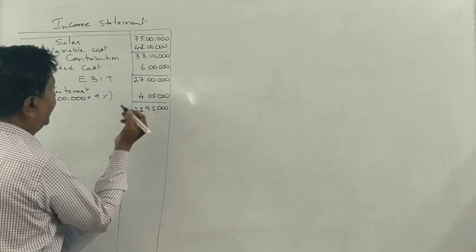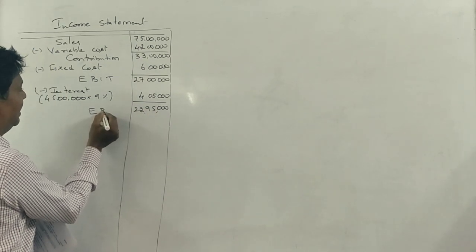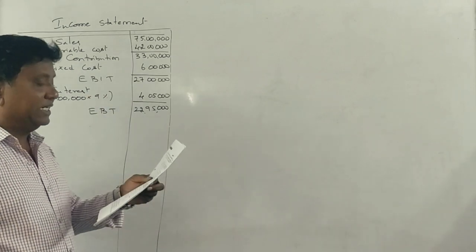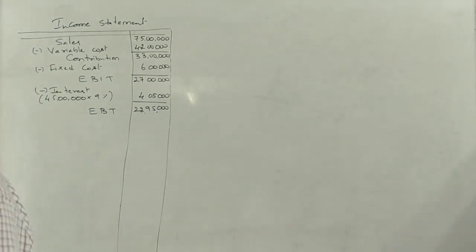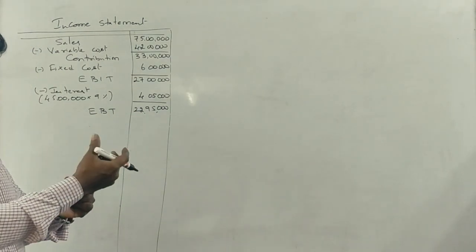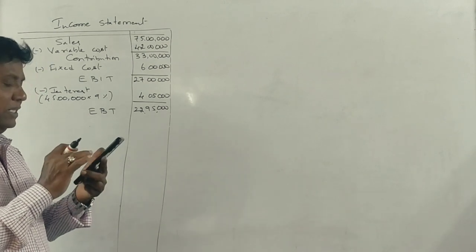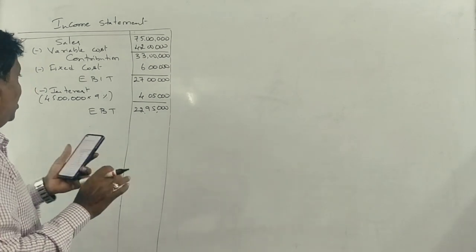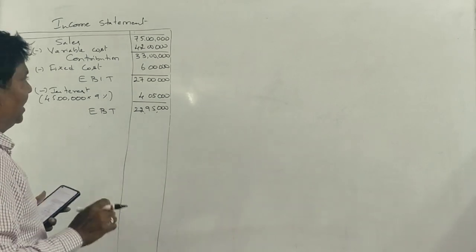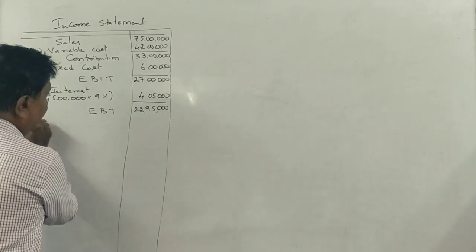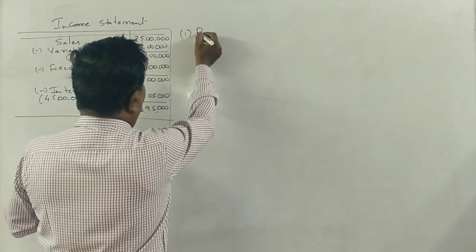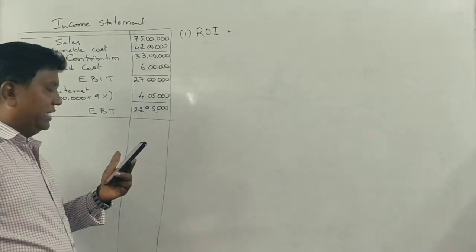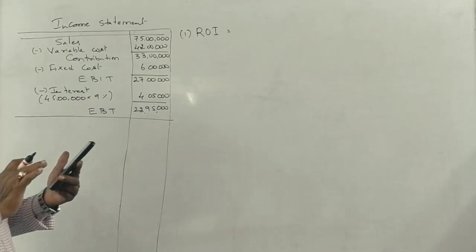After deducting interest, EBT (earnings before tax) comes to ₹22 lakhs 95,000. This gives us the income statement. The first question asks for return on investment (ROI).